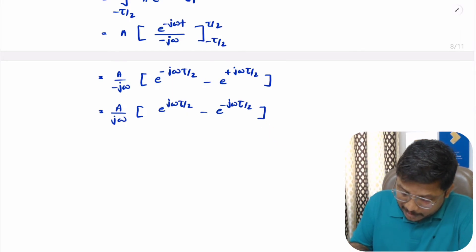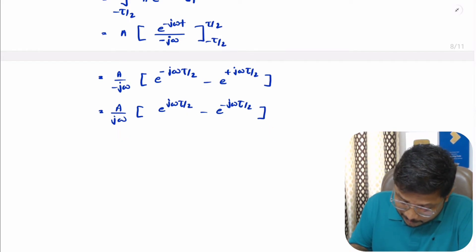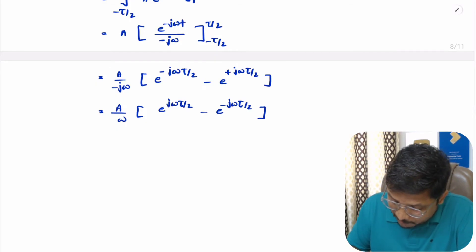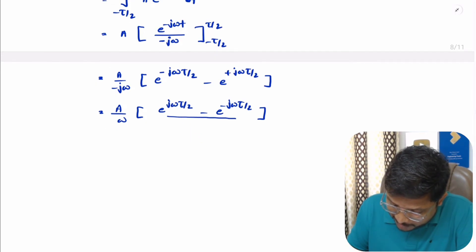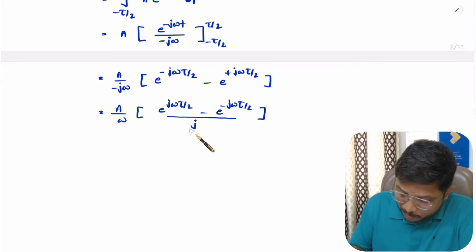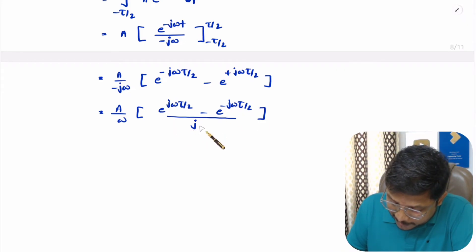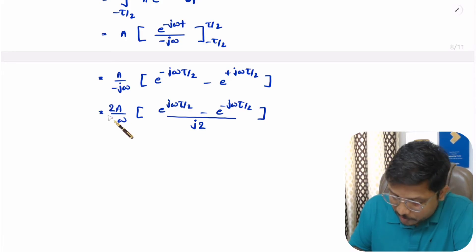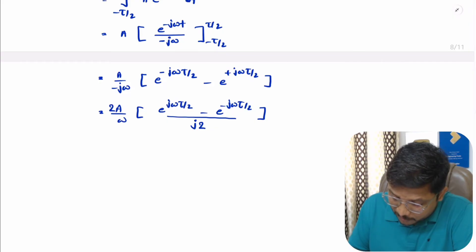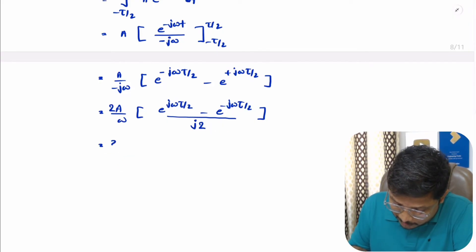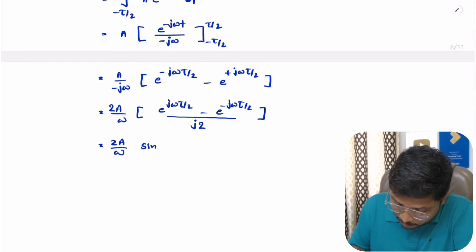If you take this j inside, then we will be dividing by j. To express this in the form of a sine function, we multiply and divide by 2. This gives us 2A/ω into sine of ωτ/2.